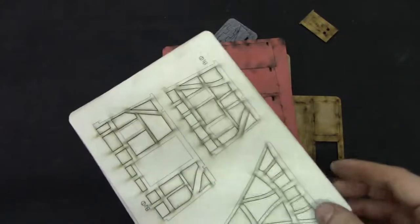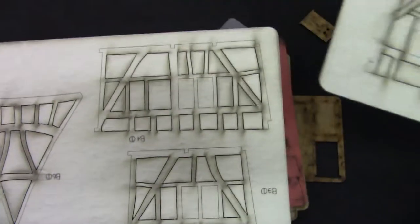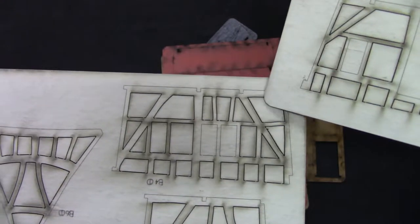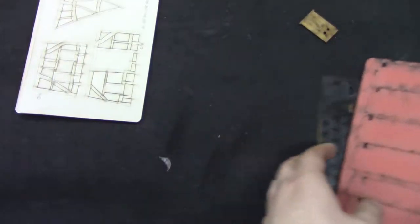Here are the cardstock inserts for the building. Where the building is burnt, you'll insert these between the layers.